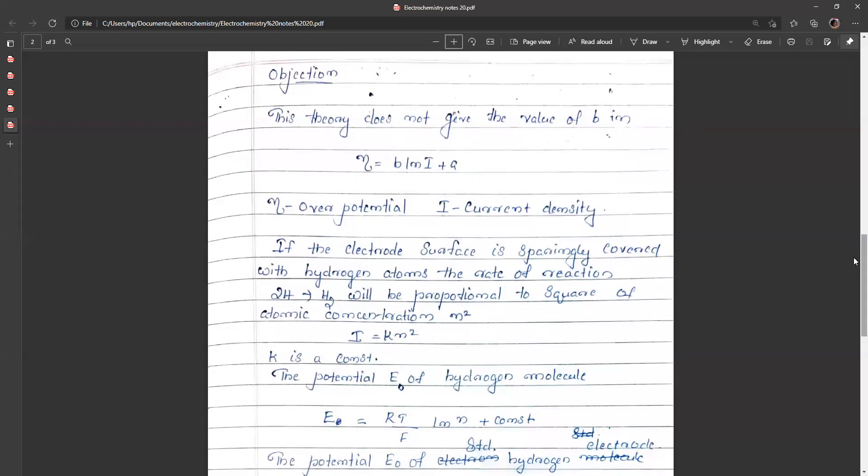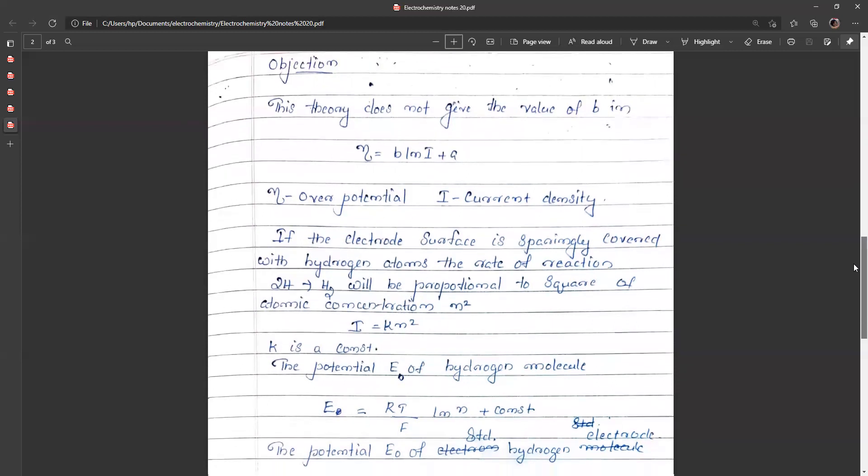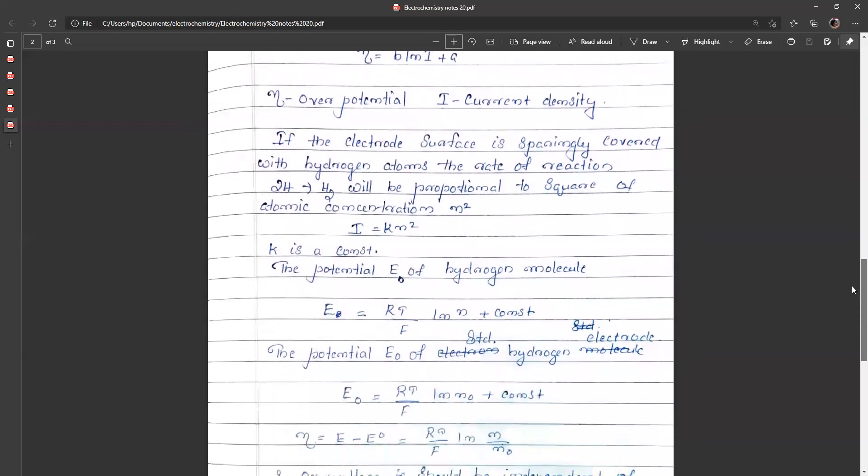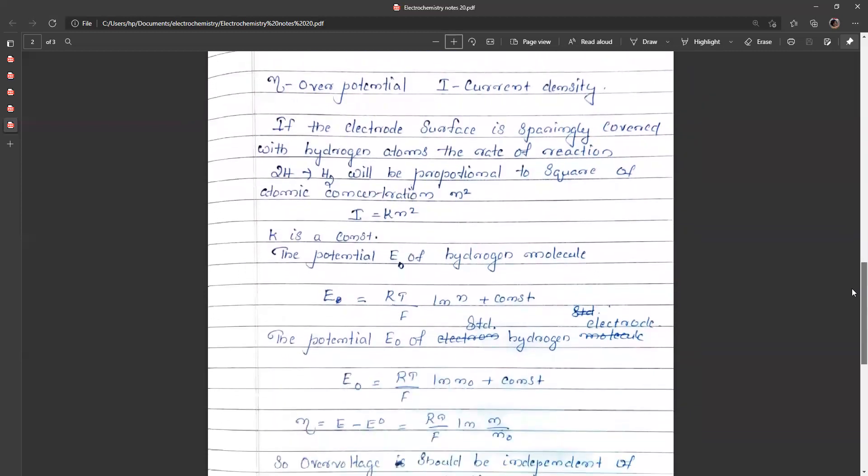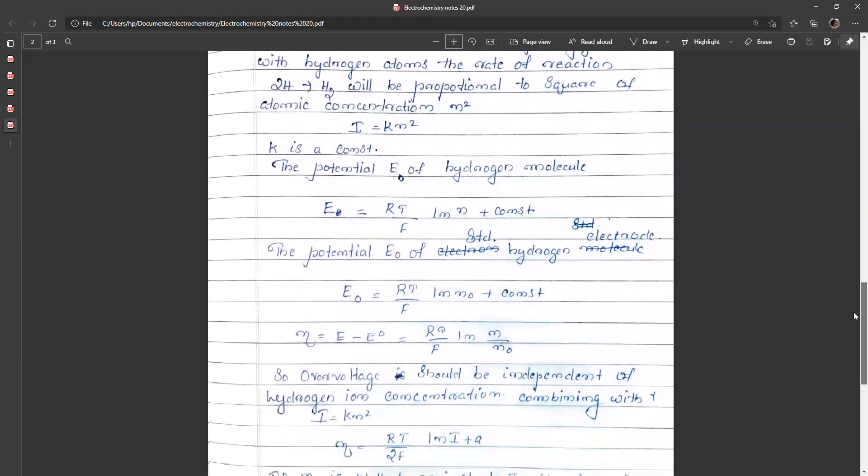i equals k n squared, where k is a constant. The potential E of hydrogen molecule equals RT by F times log n plus a constant. And then potential E0 or standard hydrogen electrode, RT by F times log n0 plus a constant. So eta equals RT by F log n by n0. So overvoltage should be independent of hydrogen ion concentration.